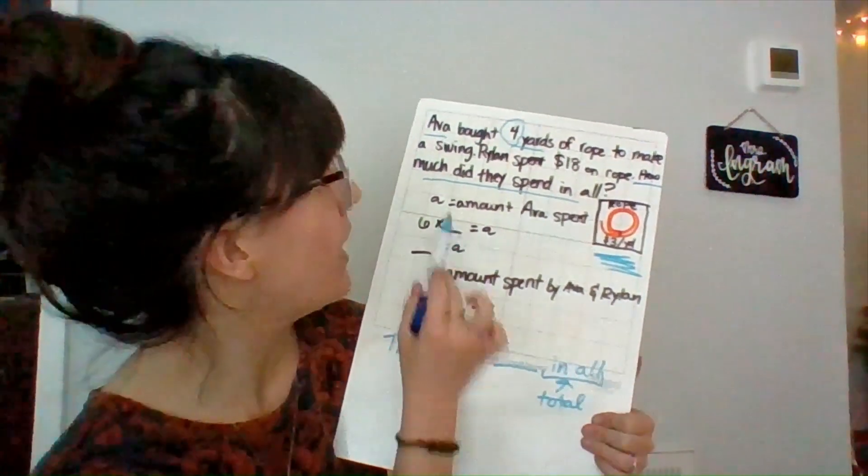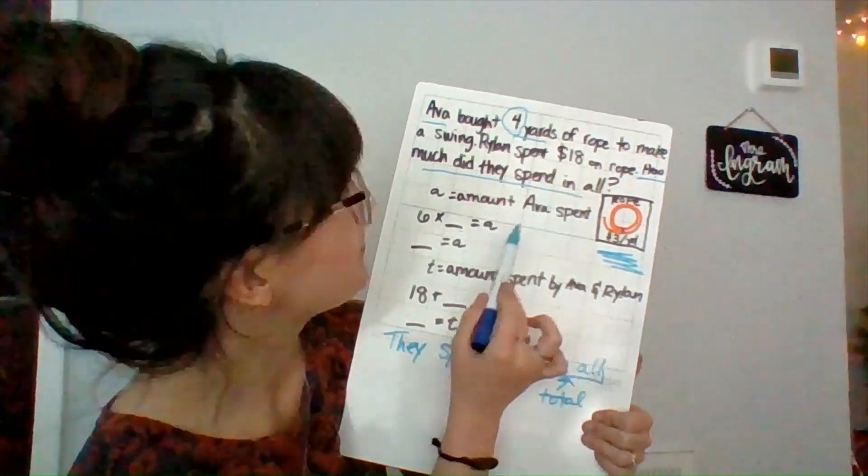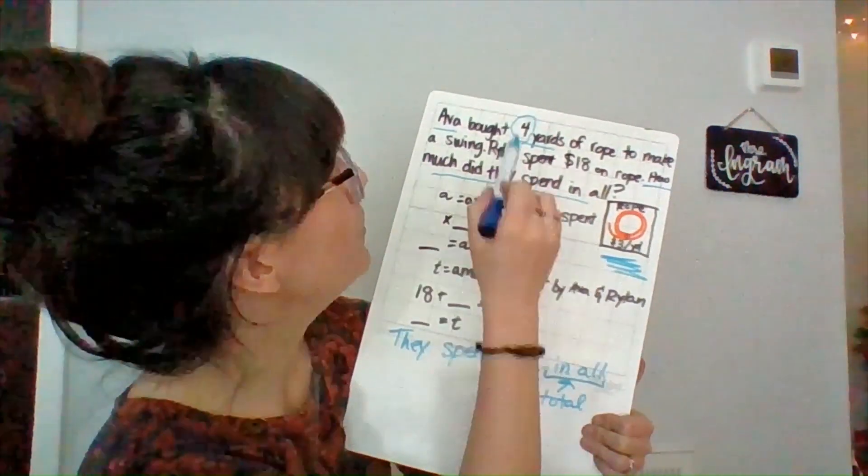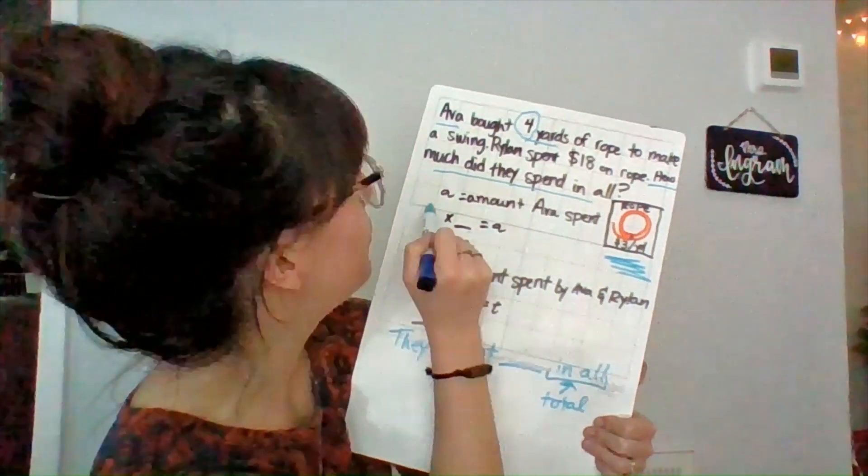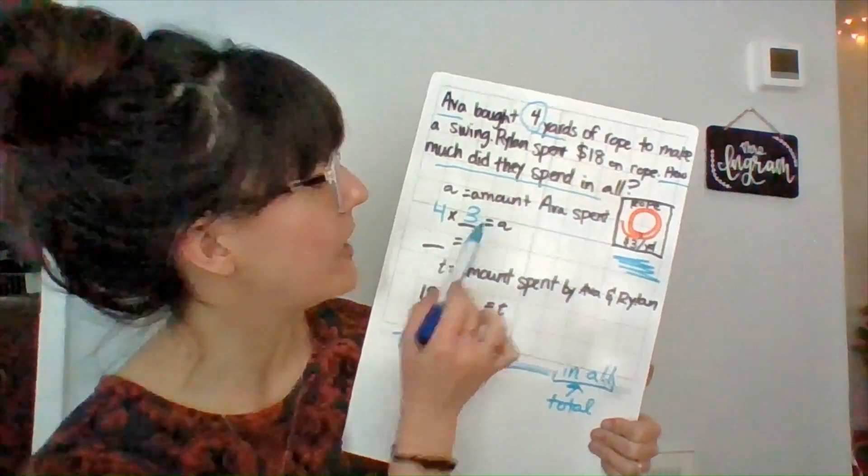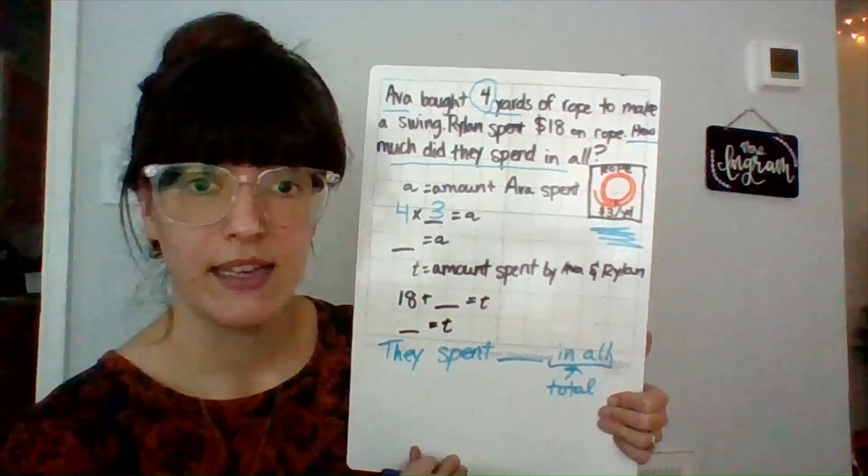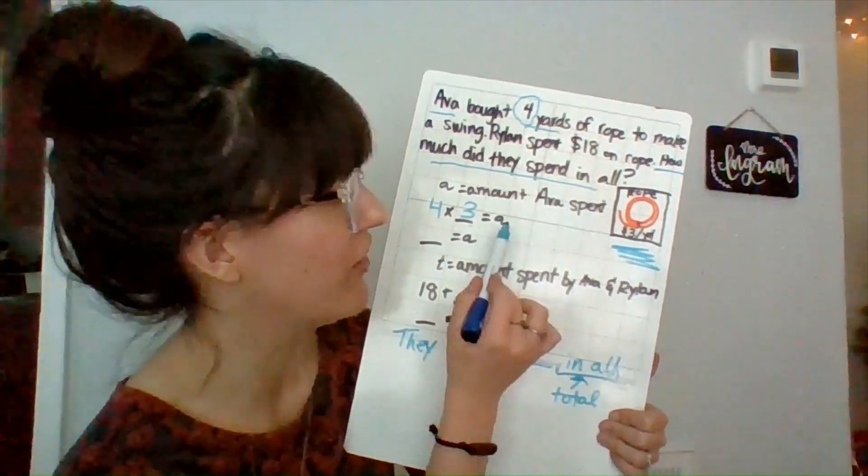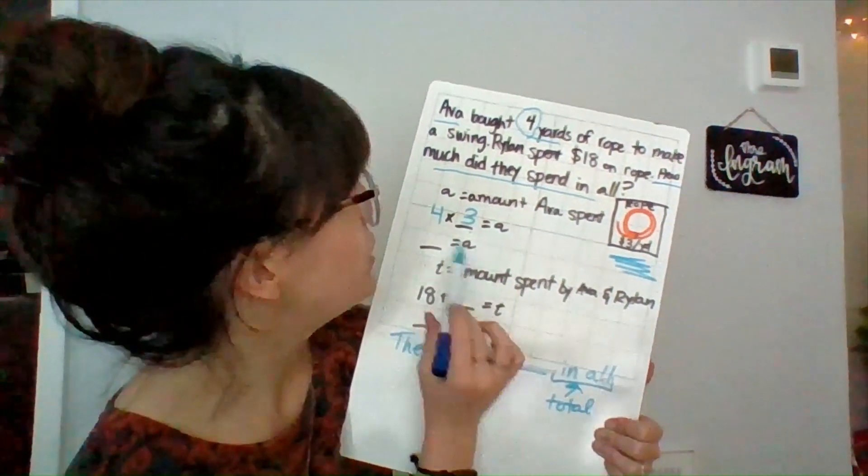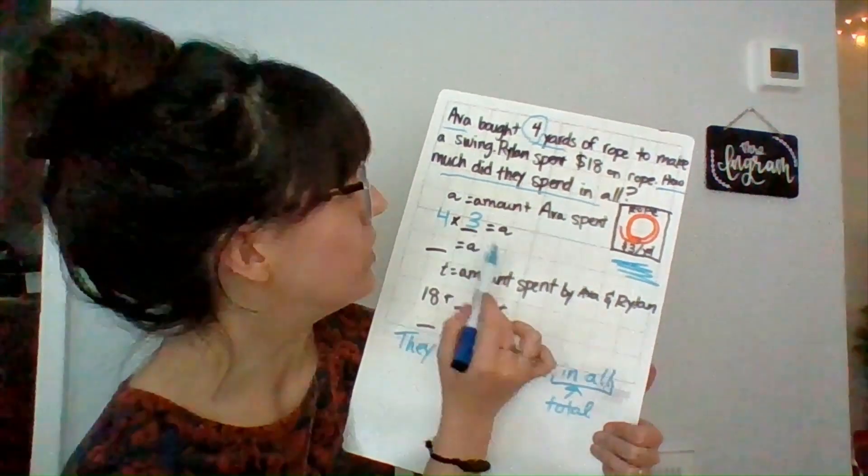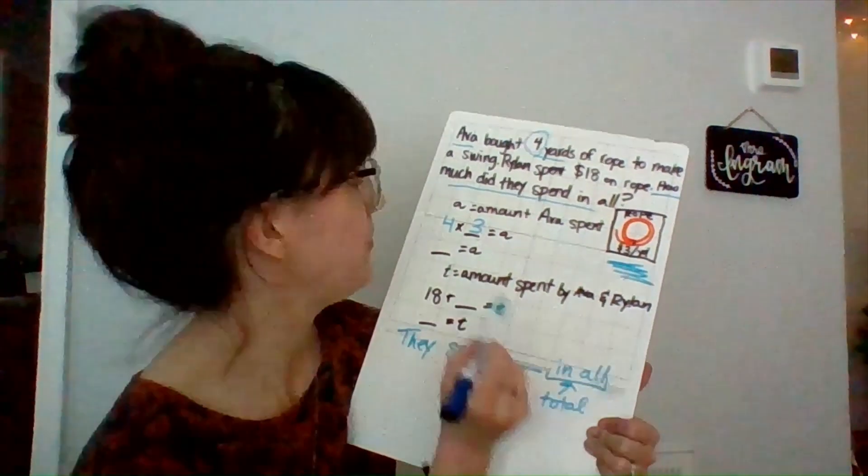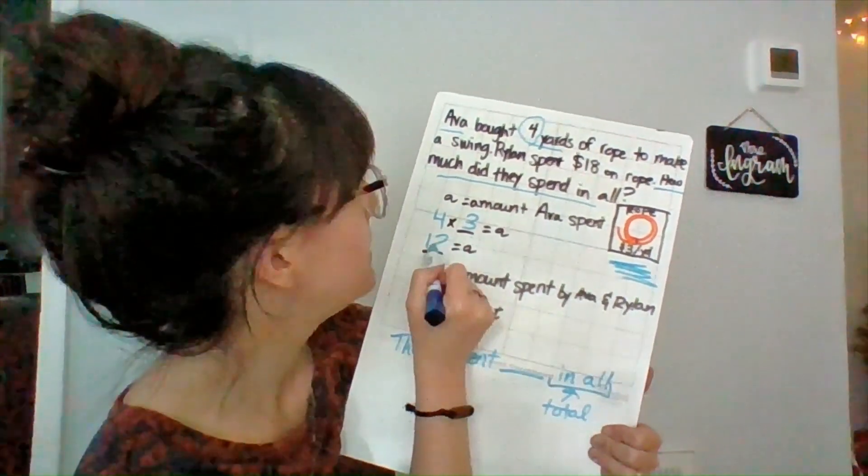So for my number sentence here, to figure out how much Ava spent, I've got $3 per yard. So that would be, she's got four yards, and they are $3 each. So four times three equals A. That's just a little variable that stands for the number we don't know yet, which is the amount that Ava made. So four times three equals, well, if I skip count by four, four, eight, 12. I know that Ava spent $12.